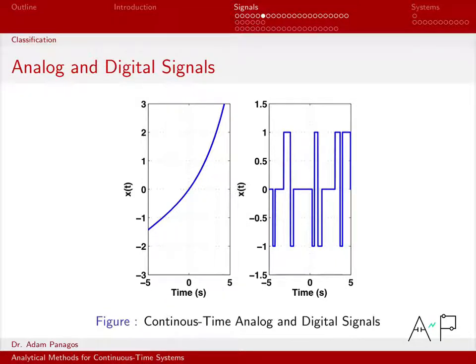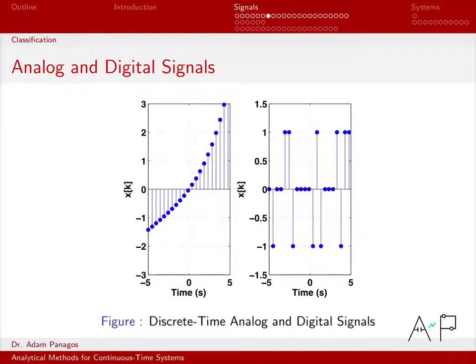We're now going to look at these exact same shapes but now in the discrete-time world. Now for this discrete-time signal x[k] here on the left, again I see this continuum of values.